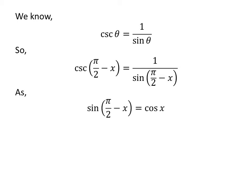We also know the trigonometry identity sin(π/2 - x) equals cos x. The proof of this identity has been explained in the video appearing in the upper right corner. The link is also mentioned in the description section.